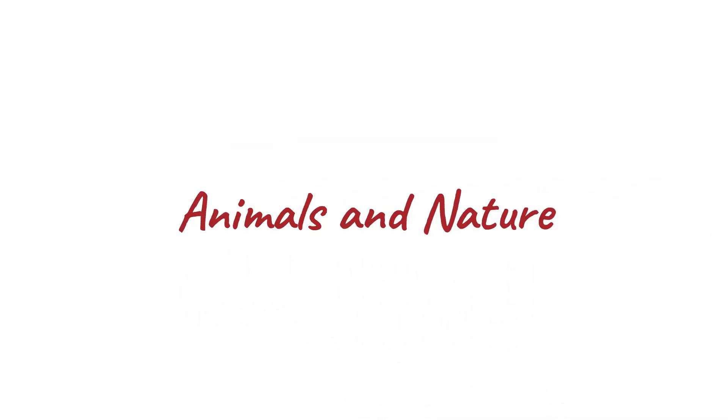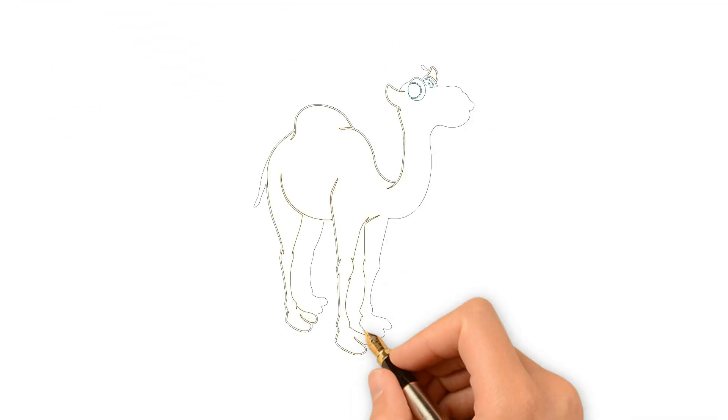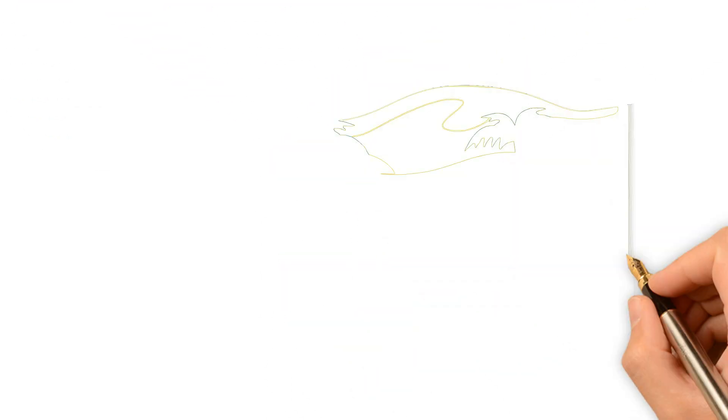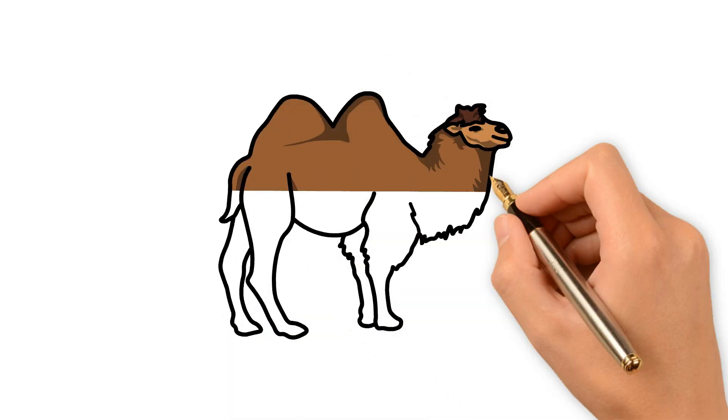Animals and nature: Camels store water in their humps. Humps store fat, not water. Camels are efficient at conserving water and can tolerate dehydration well. Their bodies can extract water from fat stores when needed.